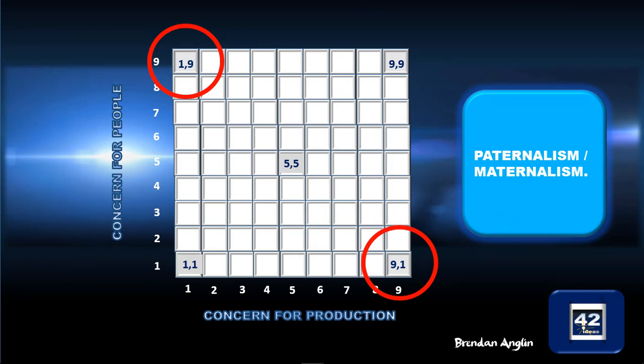Blake and Mouton also look at a paternalism/maternalism style of leadership, which is not about combining country club and task management, but using them separately. This leads to an approach where you create a company like a family, but treat the people in it like children — you have to constantly push them to do tasks, acting like a mother or father figure while driving them to deliver results.